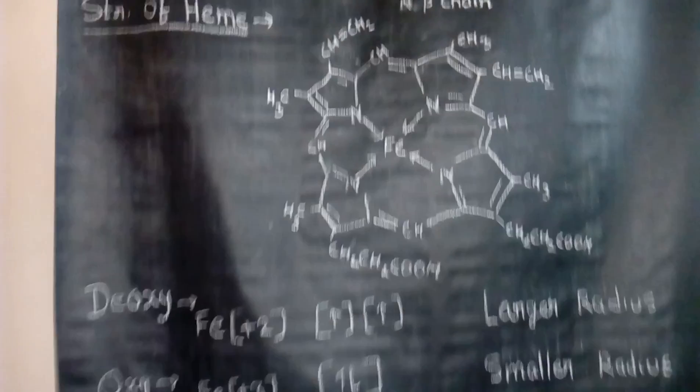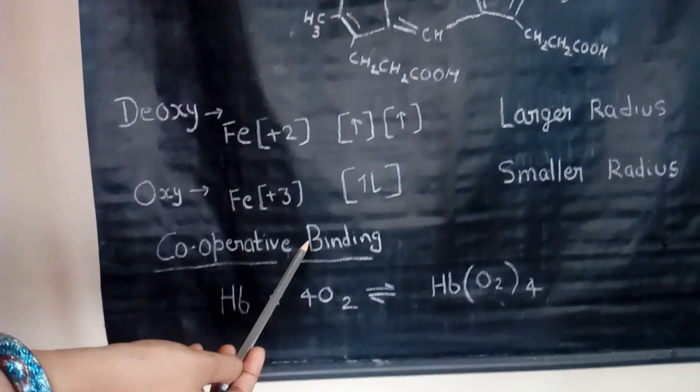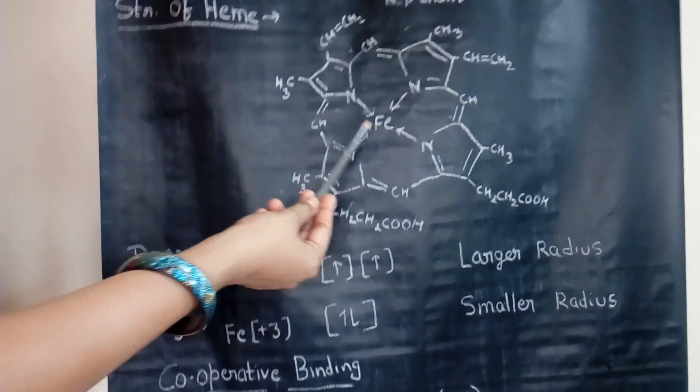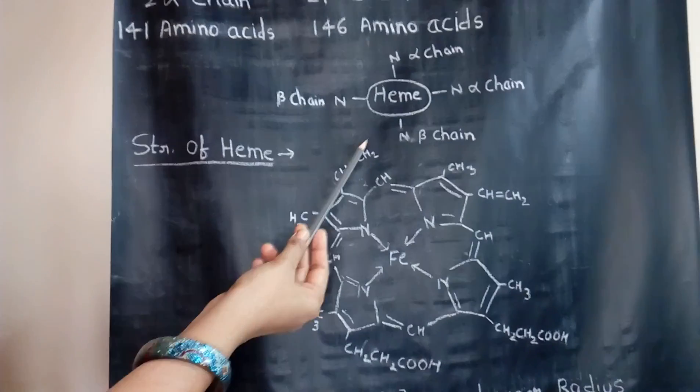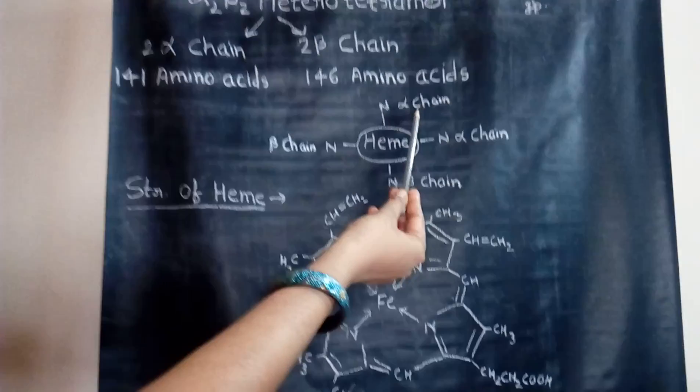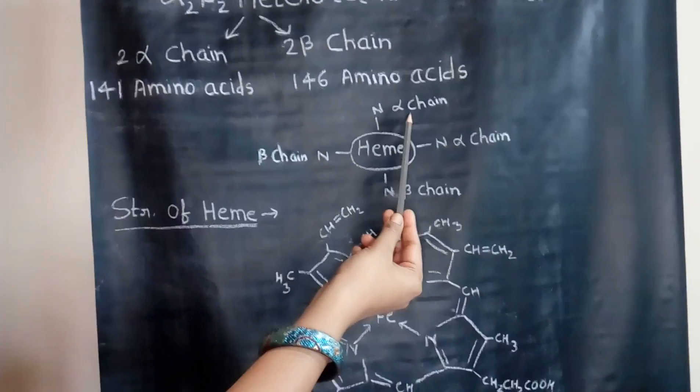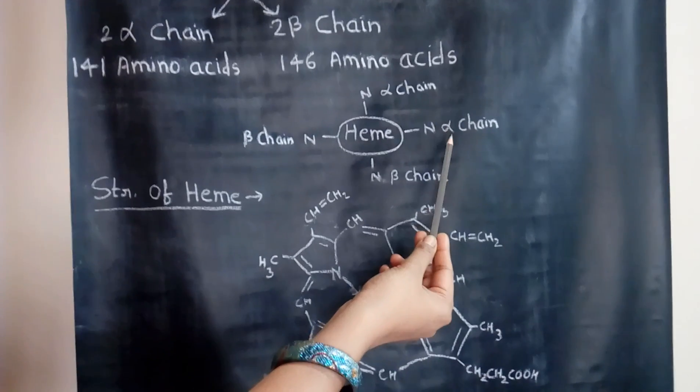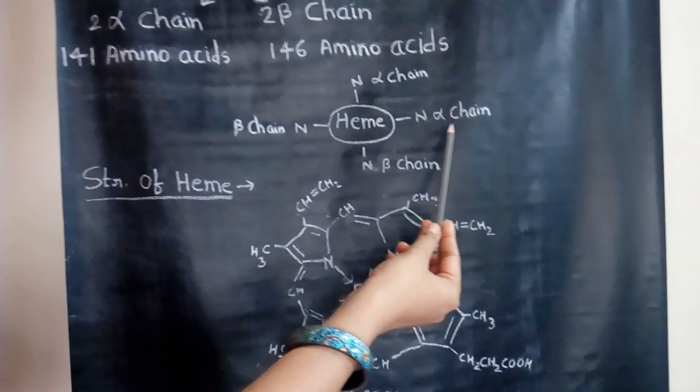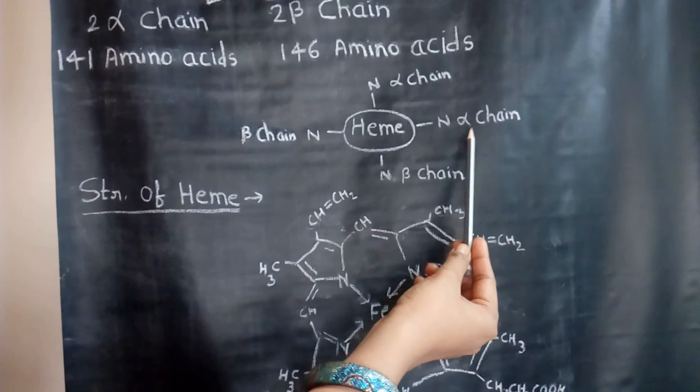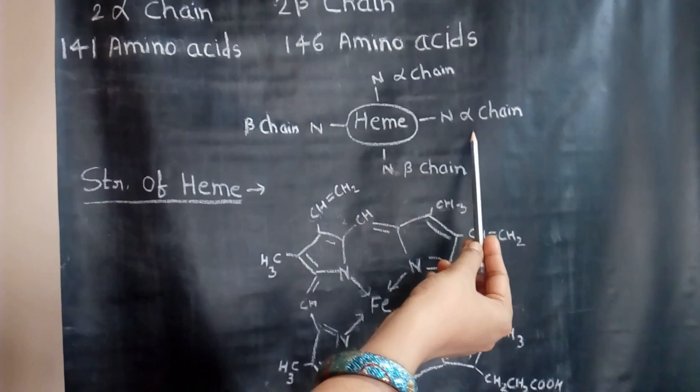There is a type of cooperative binding in hemoglobin. It means when the iron comes in planar state, there comes a change in the conformation of alpha chain, so it binds to oxygen molecule. The binding in this chain enhances the binding of another chain. Its conformational change occurs and it binds to the oxygen molecule.